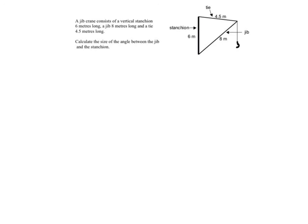And now our final example. We have a jib crane consisting of a vertical stanchion 6 metres long, and the jib is 8 metres long, and the tie is 4.5 metres long. Calculate the size of the angle between the jib and the stanchion.